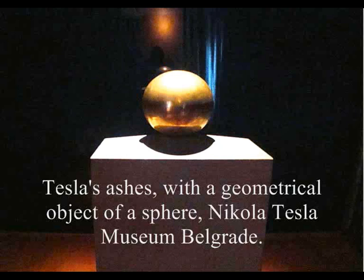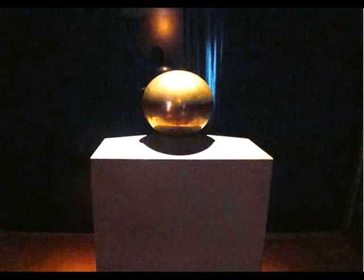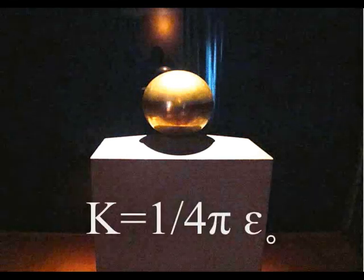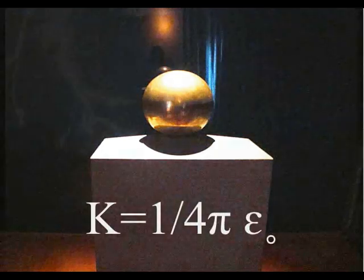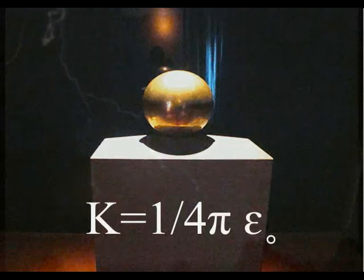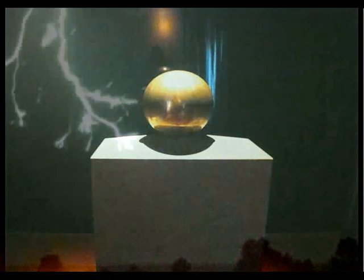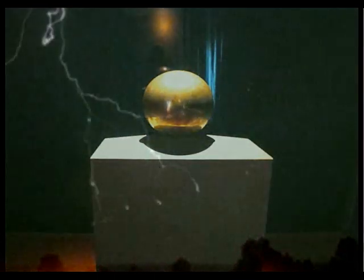Tesla's ashes rest under his favorite geometrical object, a sphere. Mathematically, a sphere is represented by 4π and can be found in the spherical shape of electric charge in free space. Recently it has been discovered that the electric charge of an electron is one of the most spherical objects in the universe.